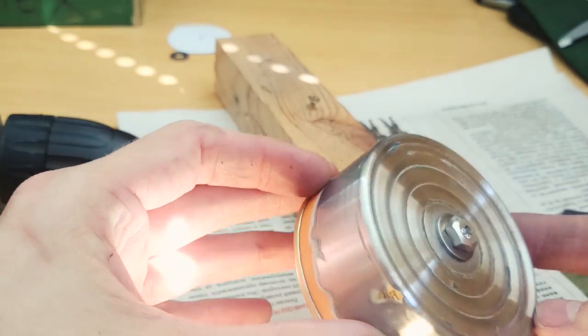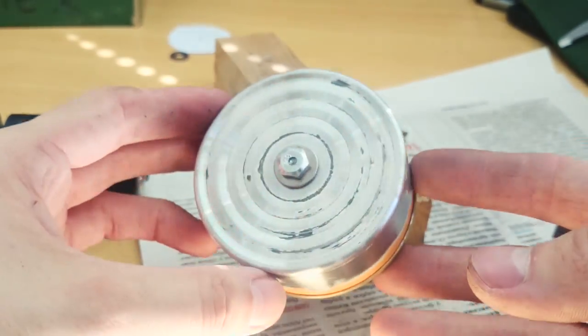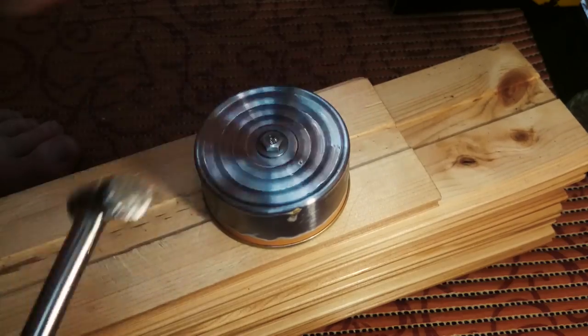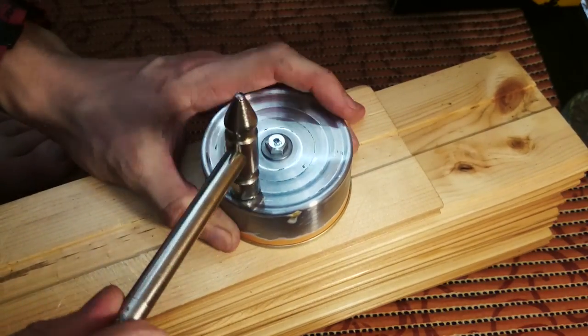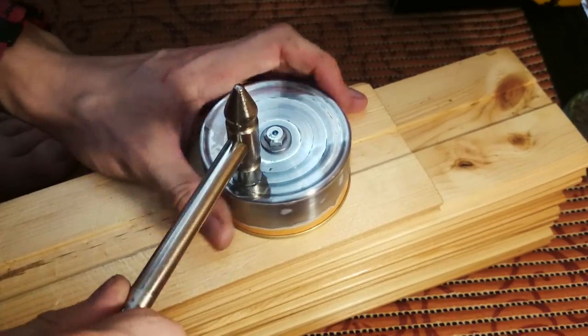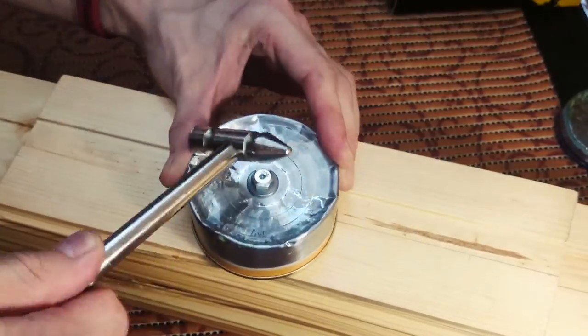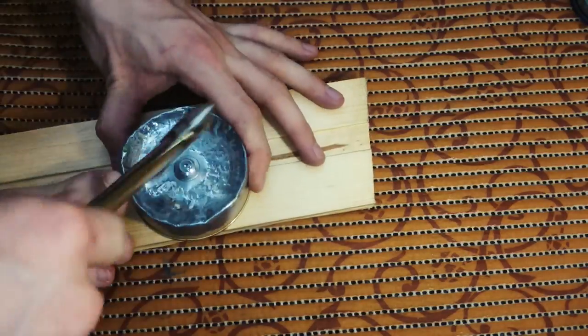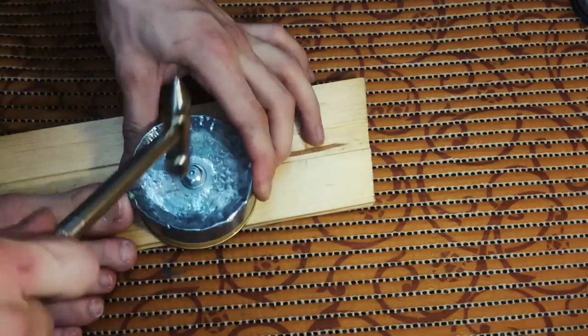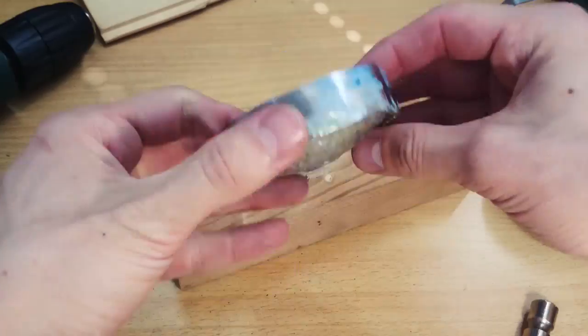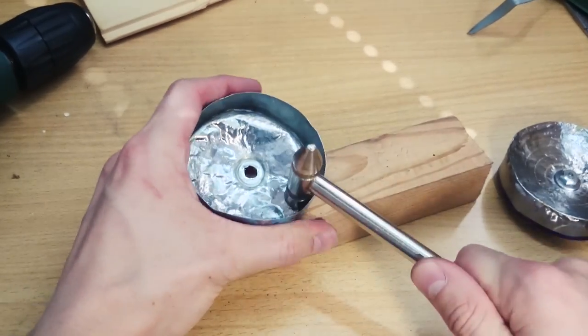The next step is giving a spherical shape to the can's bottom. Use a little hammer or some piece of metal. Now turn it inside out.